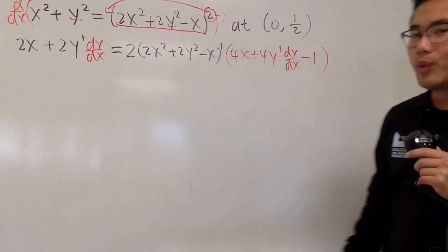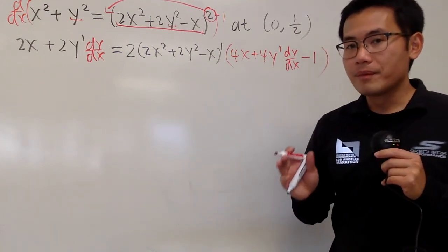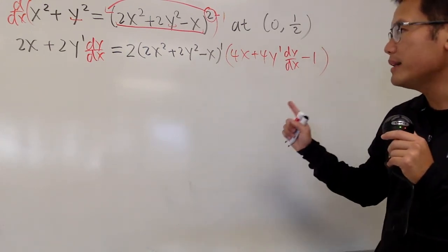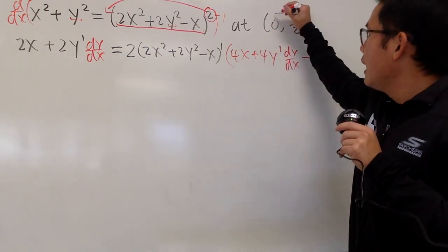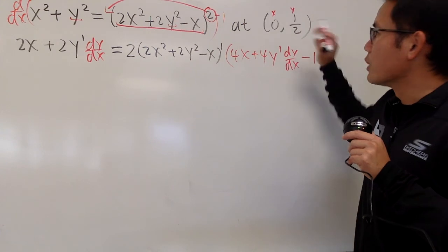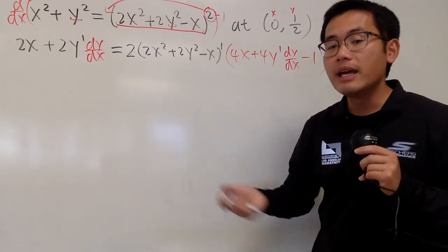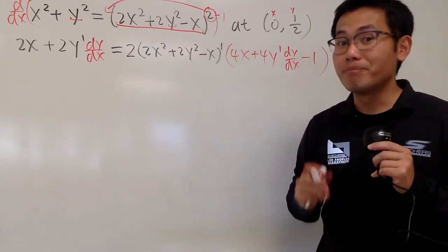So, this is what we have. Now, pay attention to the question. It's asking us to find dy dx at this point. So, it's much better if we plug in x equals 0 and y equals 1 half into all the x, y, and then solve for the dy dx. Much easier this way.